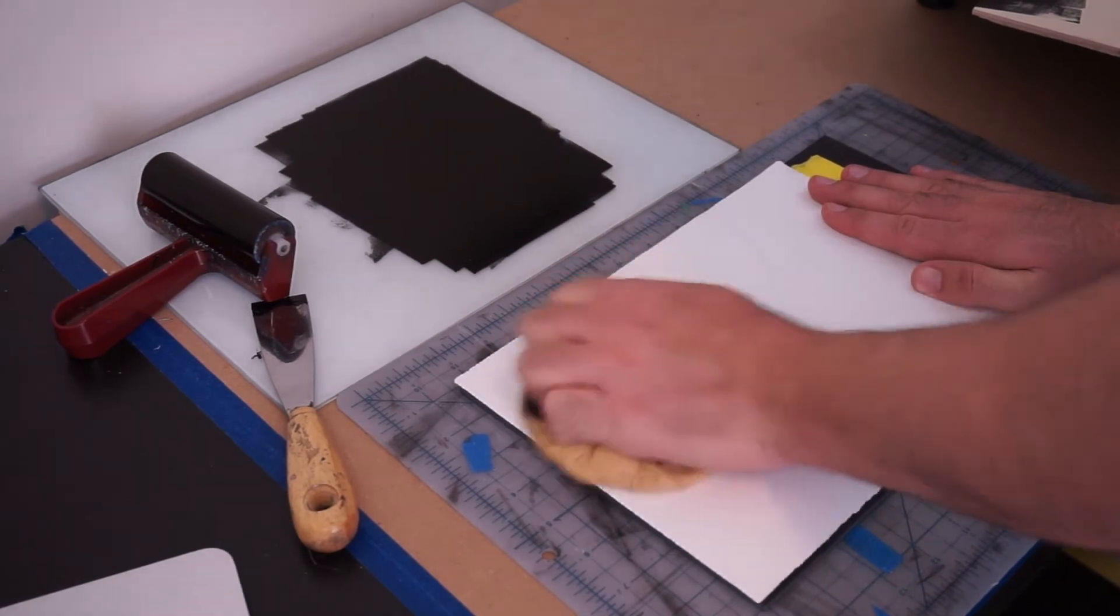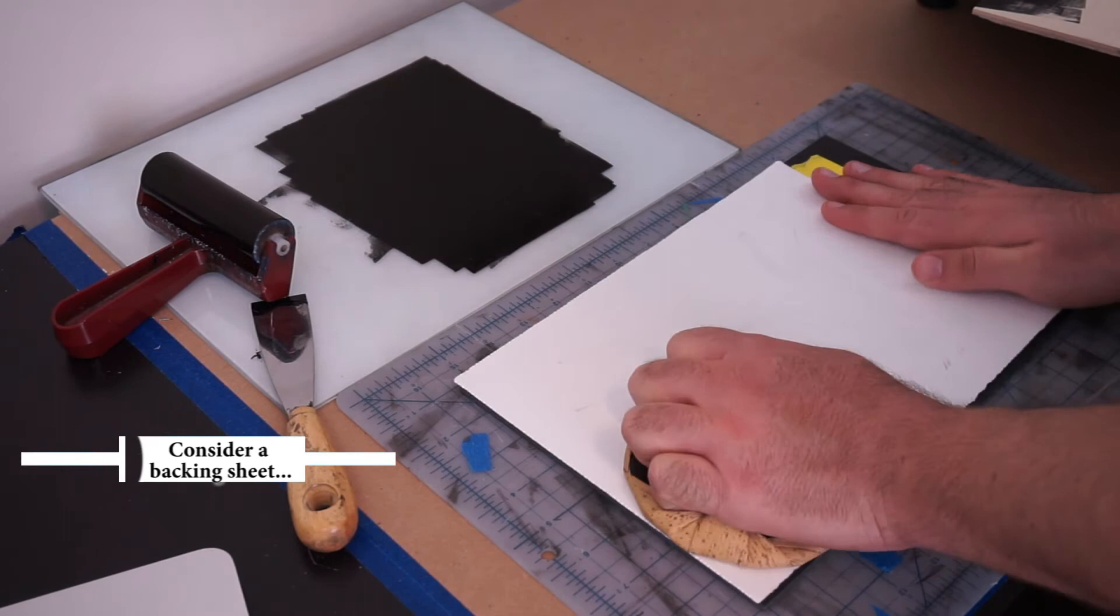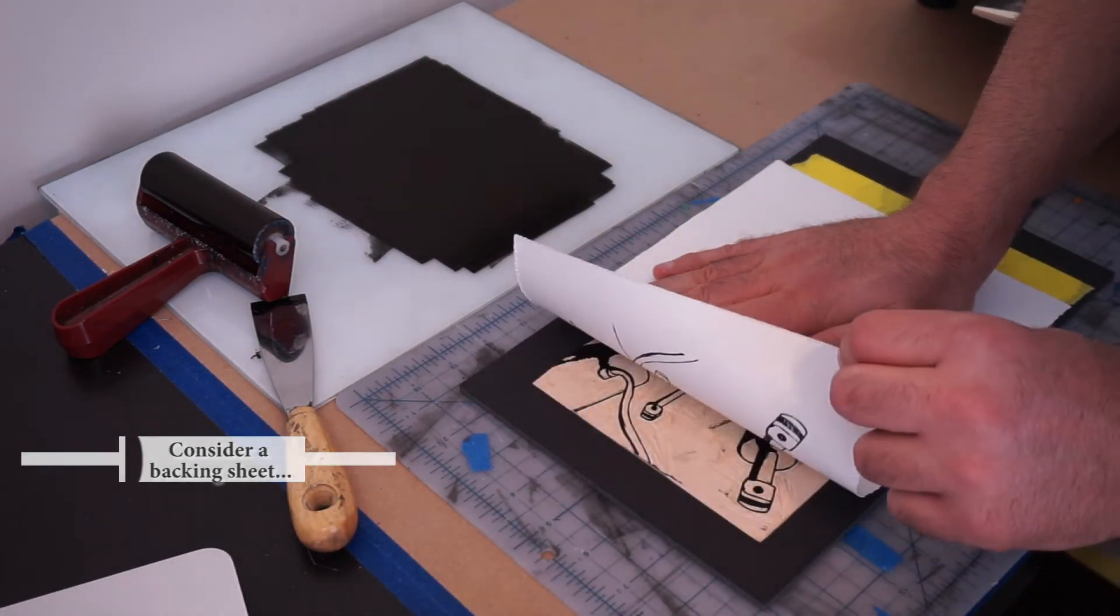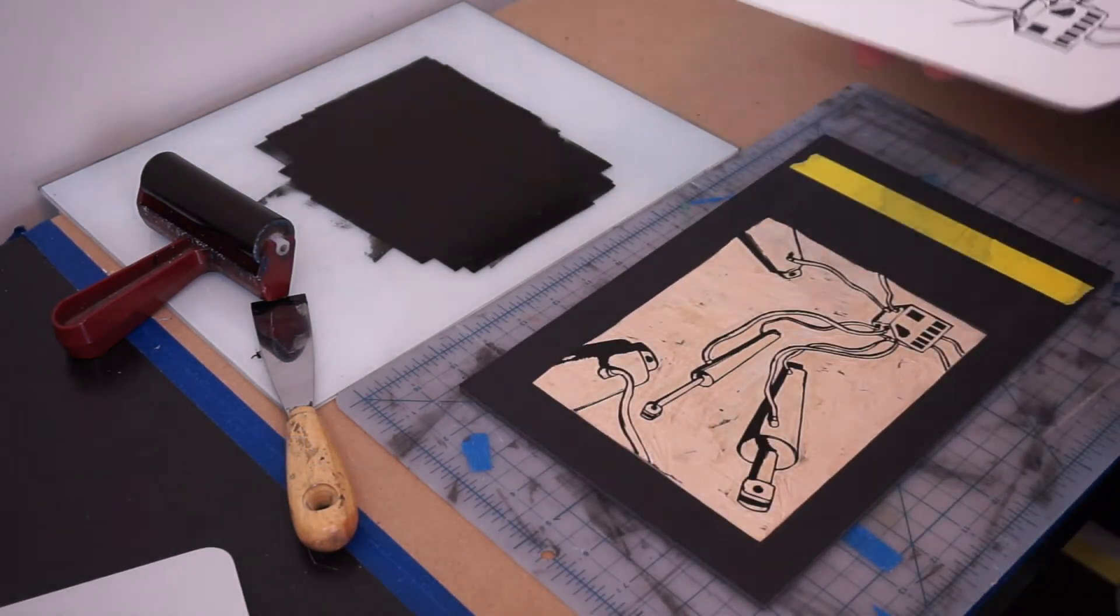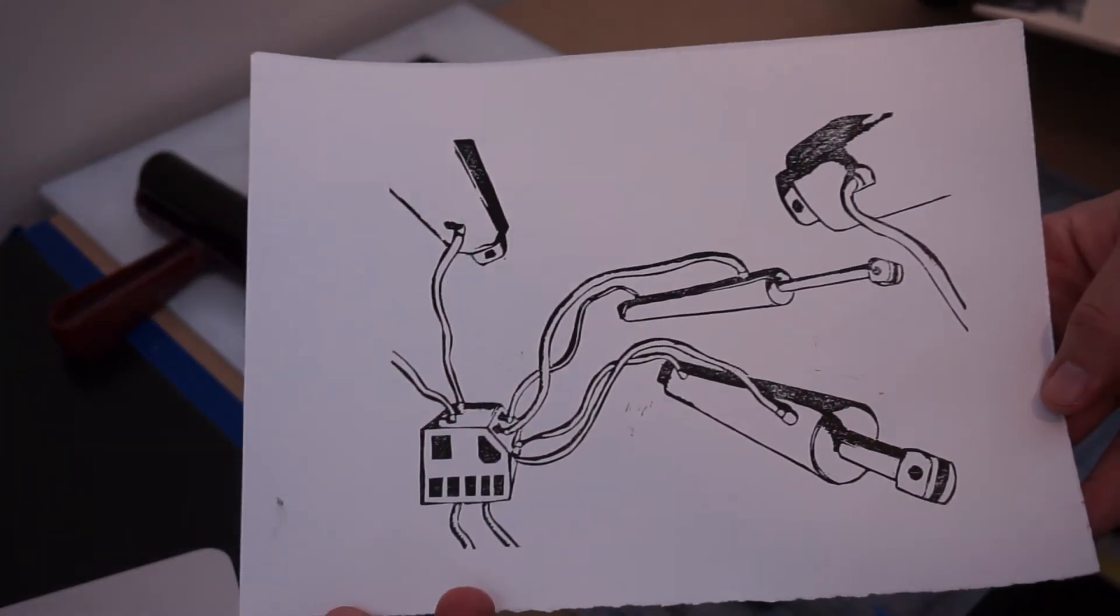Also a quick note, depending on your paper if it's really thin or fragile you might need a backing sheet so you don't wear through the printing paper with the spoon. And thinner papers are easier to print by hand. Here's a hand printed image. I could have put a bit more elbow into it and achieved a darker print, but now I'm going to do the same thing with the press.